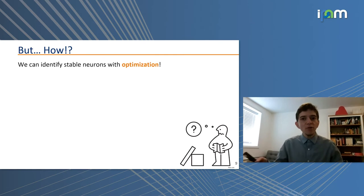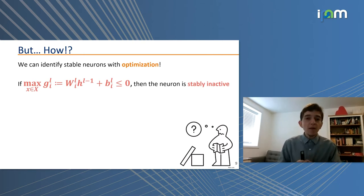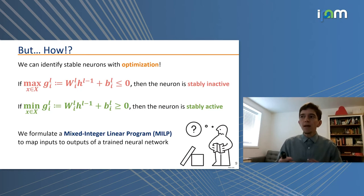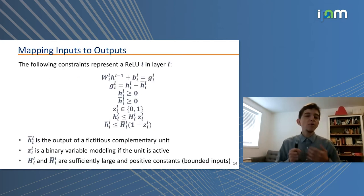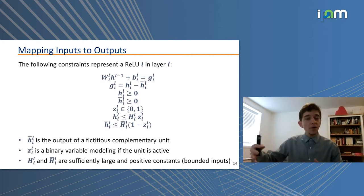This is where optimization comes in. If we maximize the pre-activation output over all valid inputs and it's always ≤ 0, the neuron is stably inactive. If we minimize it and it's always ≥ 0, the neuron is stably active. In both cases we can formulate a mixed integer linear program to map the inputs and outputs of a trained neural network. There's a lot of work on formulating optimization problems over trained neural networks — in fact, I suspect Joey is going to discuss that in his talk later today.